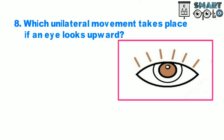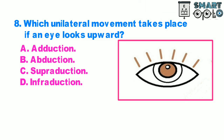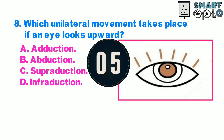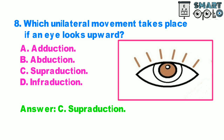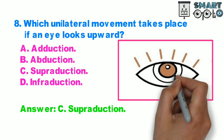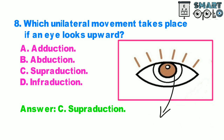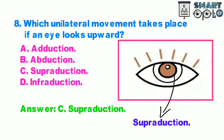Question 8. Which unilateral movement takes place if an eye looks upward? A. Adduction, B. Abduction, C. Supraduction, D. Infraduction. This upward movement is called Supraduction.